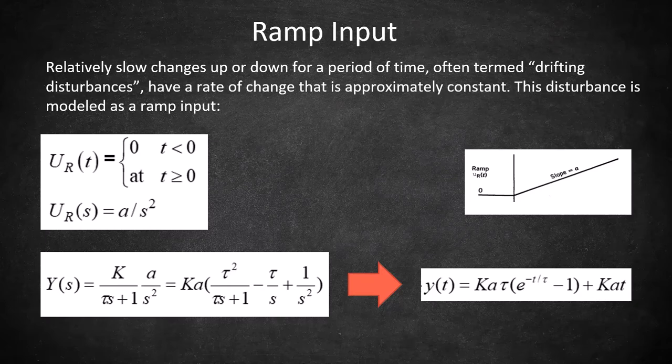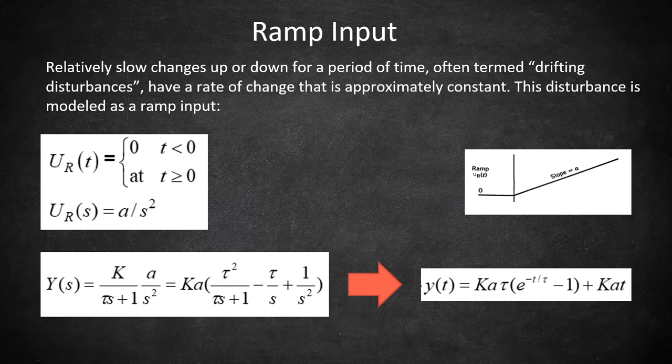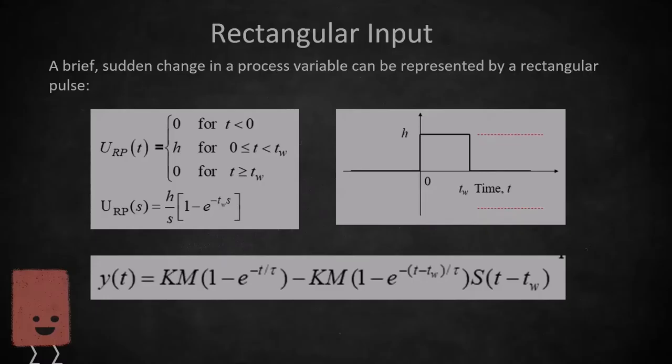When will we actually use this input in practice? When in industry will we see a ramp input? Well, common industry ramp changes include feed composition and catalyst activity.